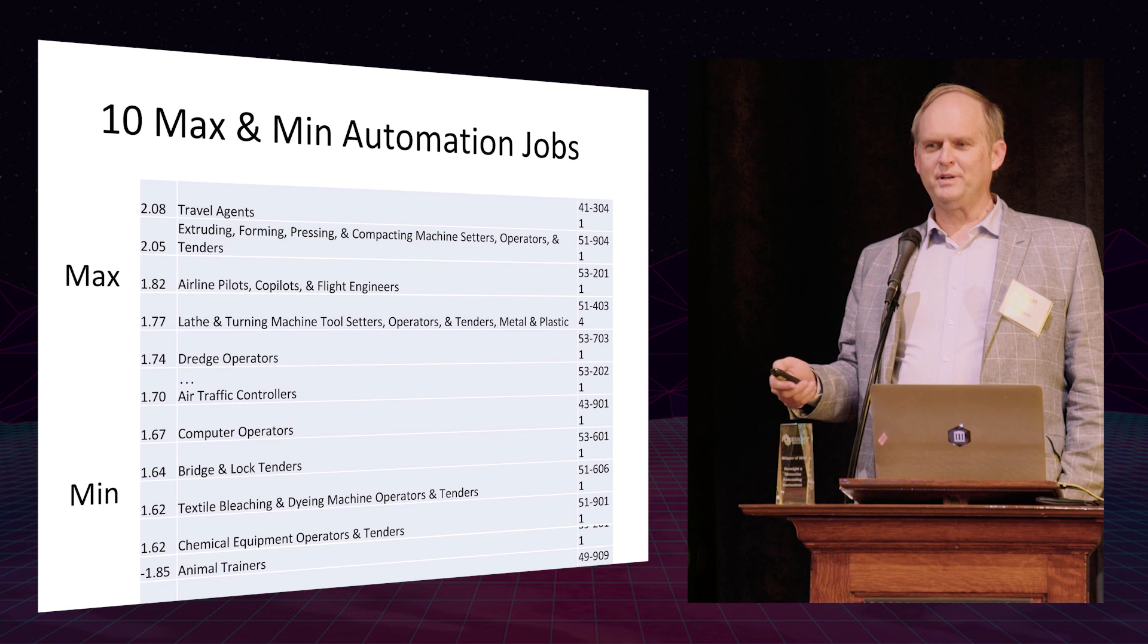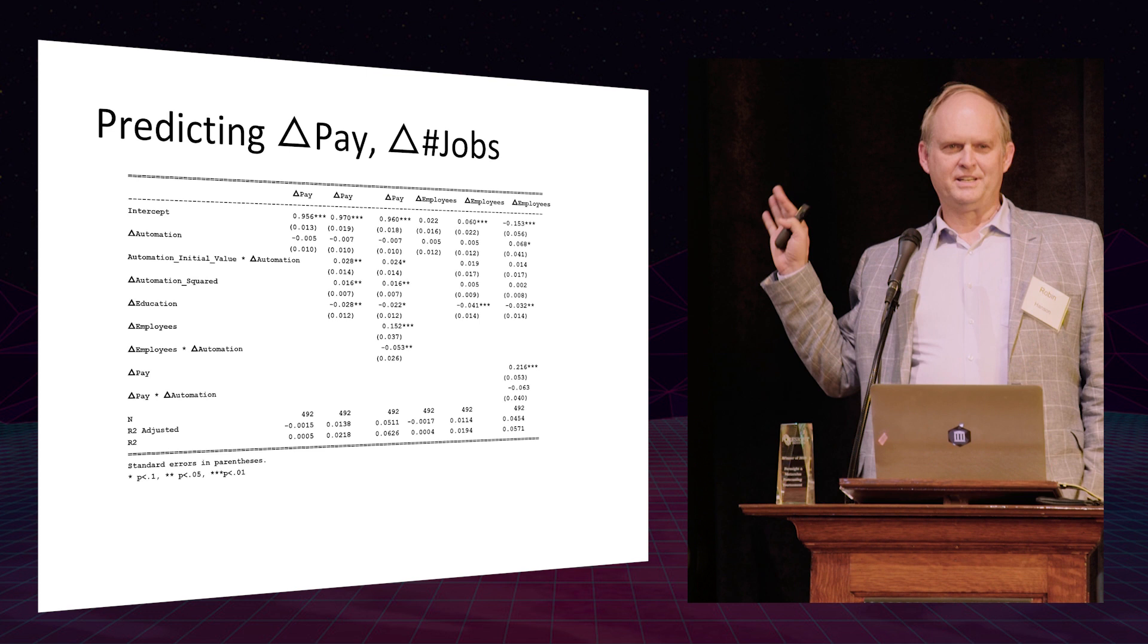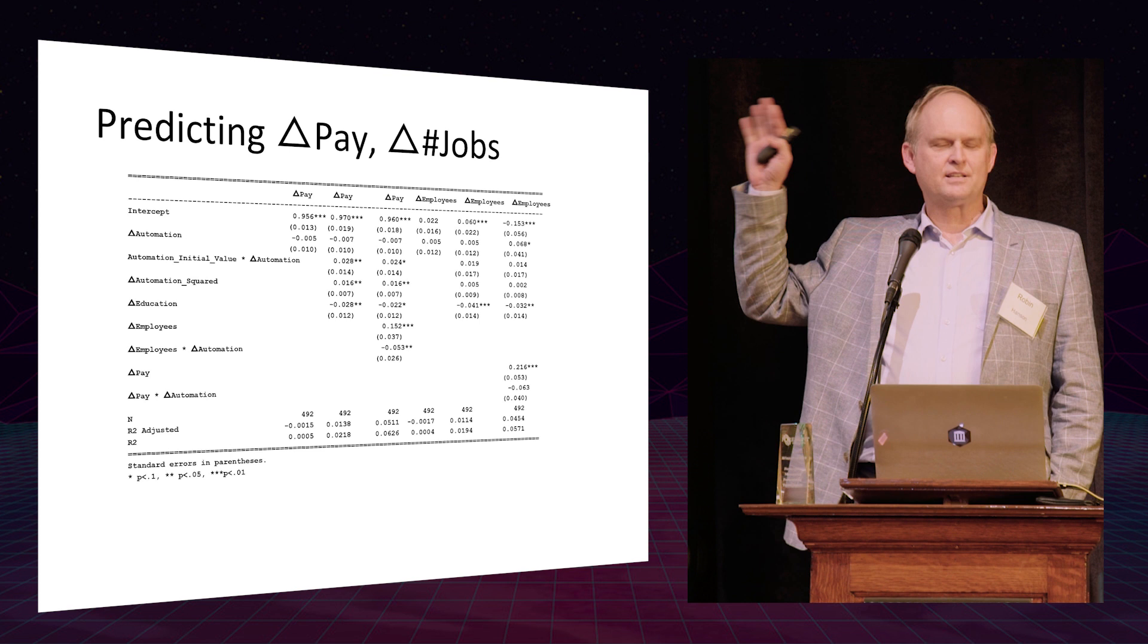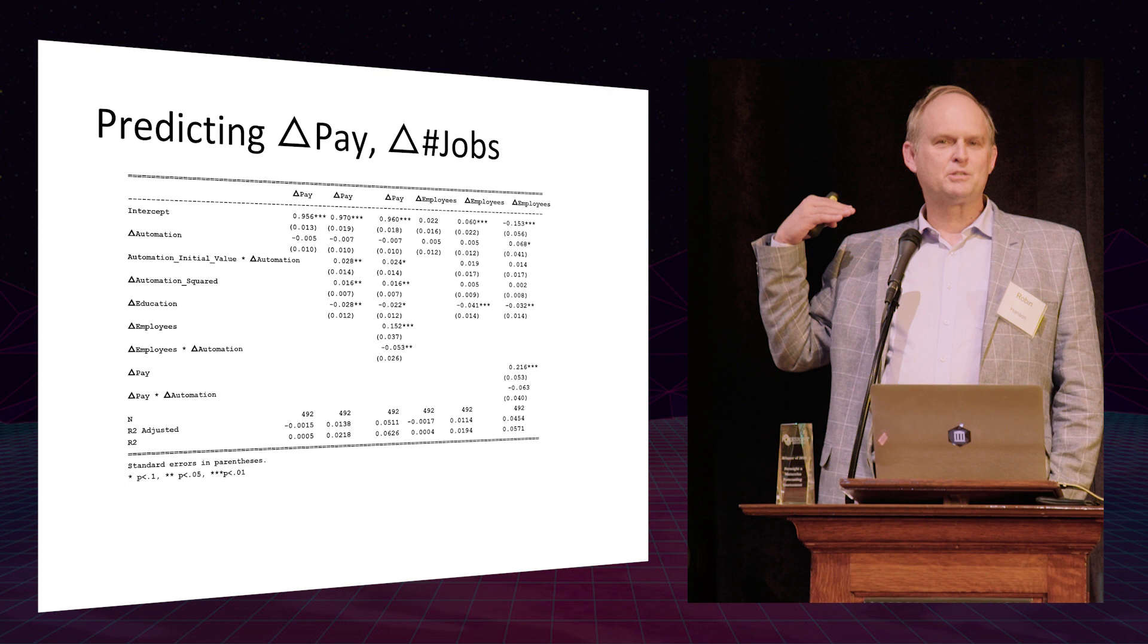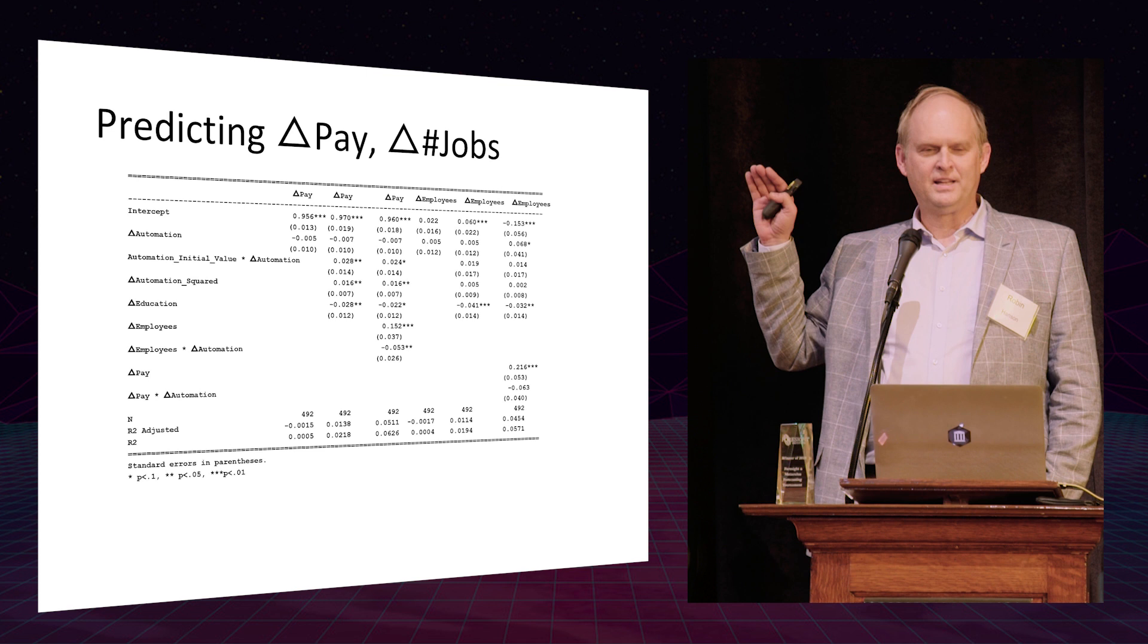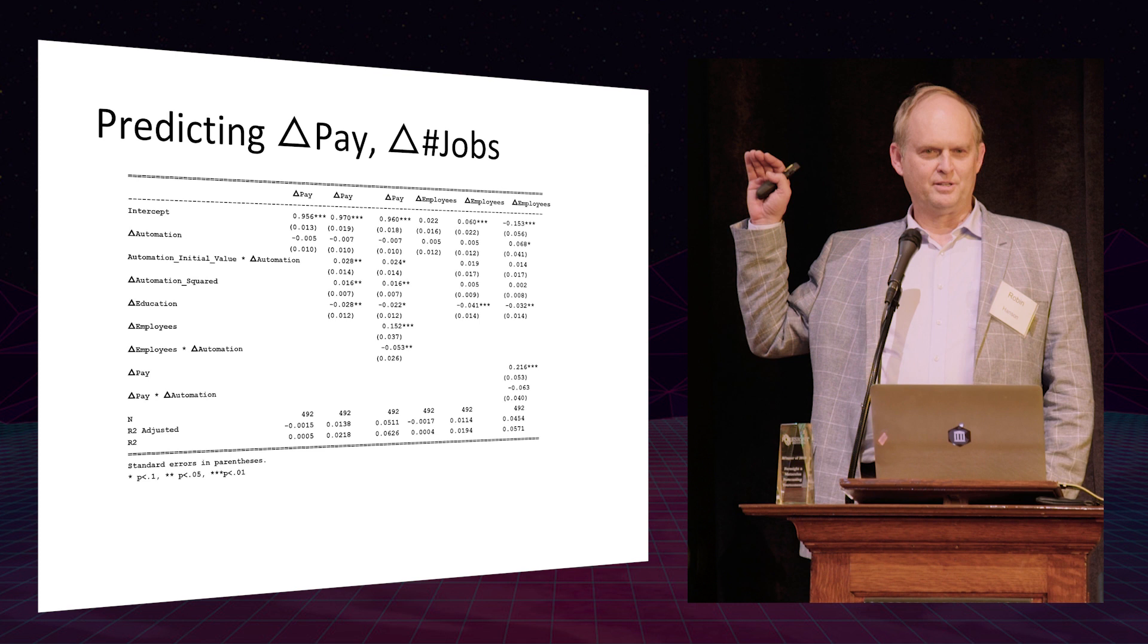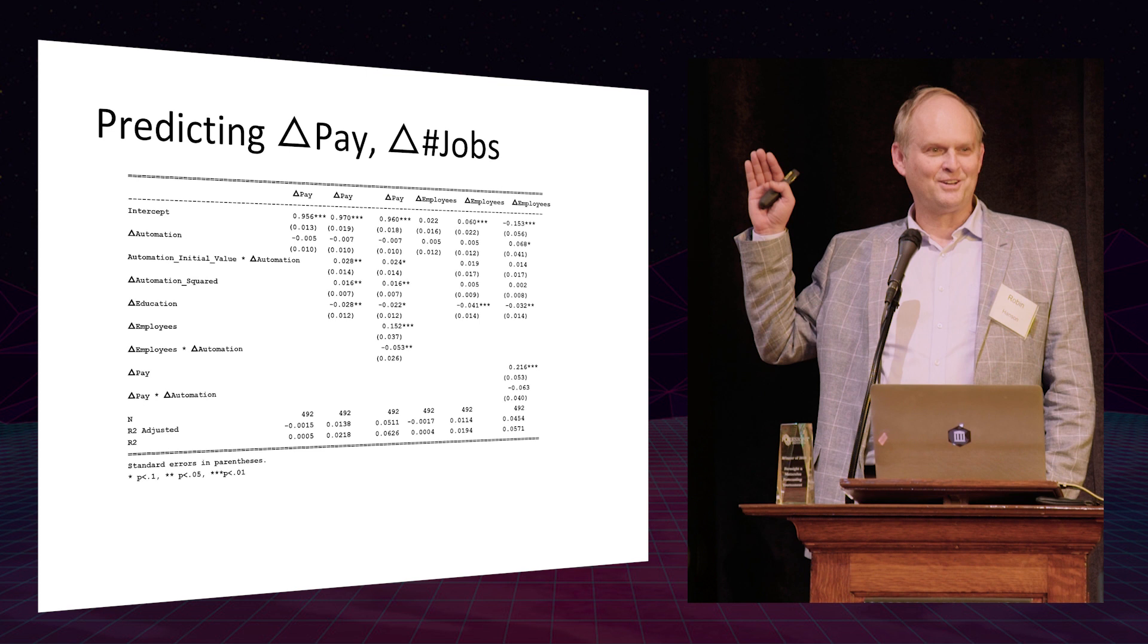So I'm not expecting you to read all the numbers in these screens, but I'm going to talk to the idea that here we're predicting two things. We're looking at the change over the last 20 years. One, we're asking for each job, how much did its pay change? We're also asking how much did the number of workers doing that job change? And we're using several things to predict that, but the key one is the second line, the change in automation over that period. And the key thing to notice is in that row, the second row, none of the numbers have stars next to them, which means there is no statistically significant effect of change in automation on change in pay or change in number of workers over the last 20 years for basically all the jobs in the US.